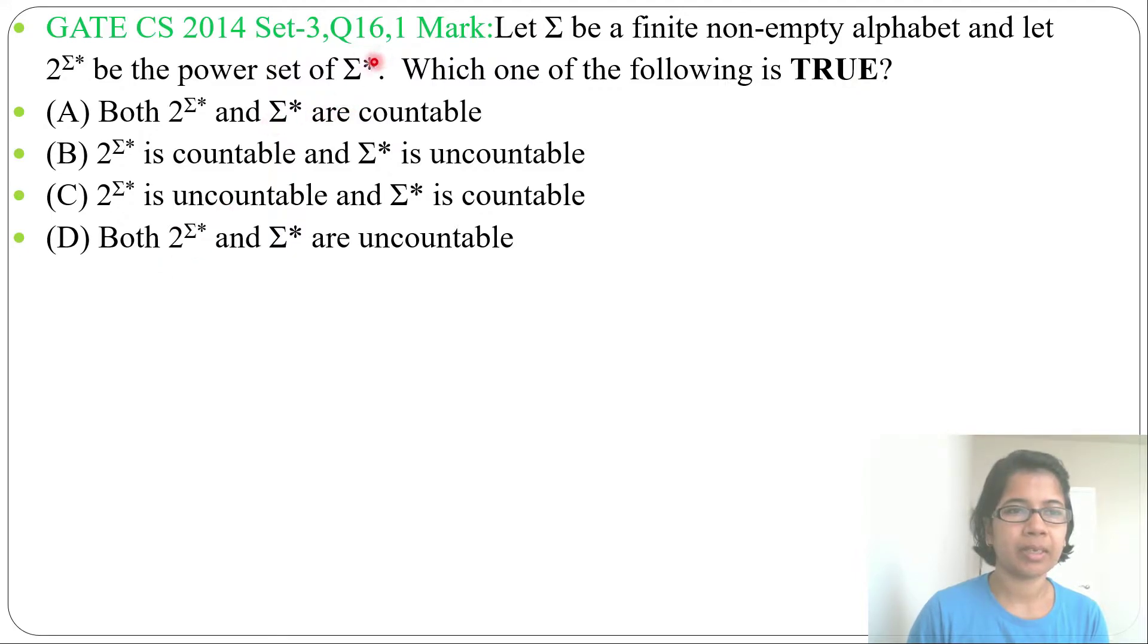First understand what is sigma star and what is 2 power sigma star. Sigma star, that is set of all strings on alphabet. This is alphabet. So alphabet Kleene closure, that is set of all strings on that alphabet. 2 power alphabet Kleene closure, that is set of all languages.